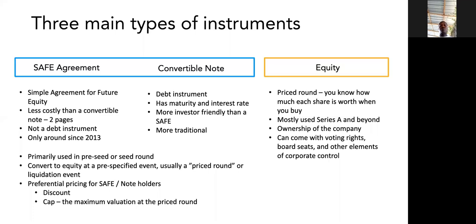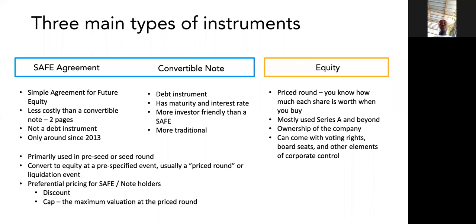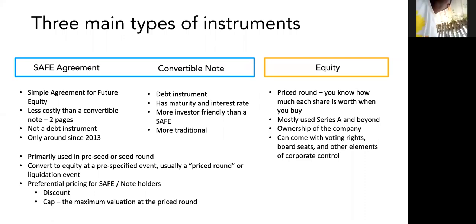A discount is exactly what it sounds like. So let's say you give a 20% discount on your SAFE agreement. A year down the line, you raise an equity round of funding and each share is worth $10. Any new investors coming in will have to pay $10 per share, but someone who had a SAFE agreement — their shares convert as if the price was only $8 per share.